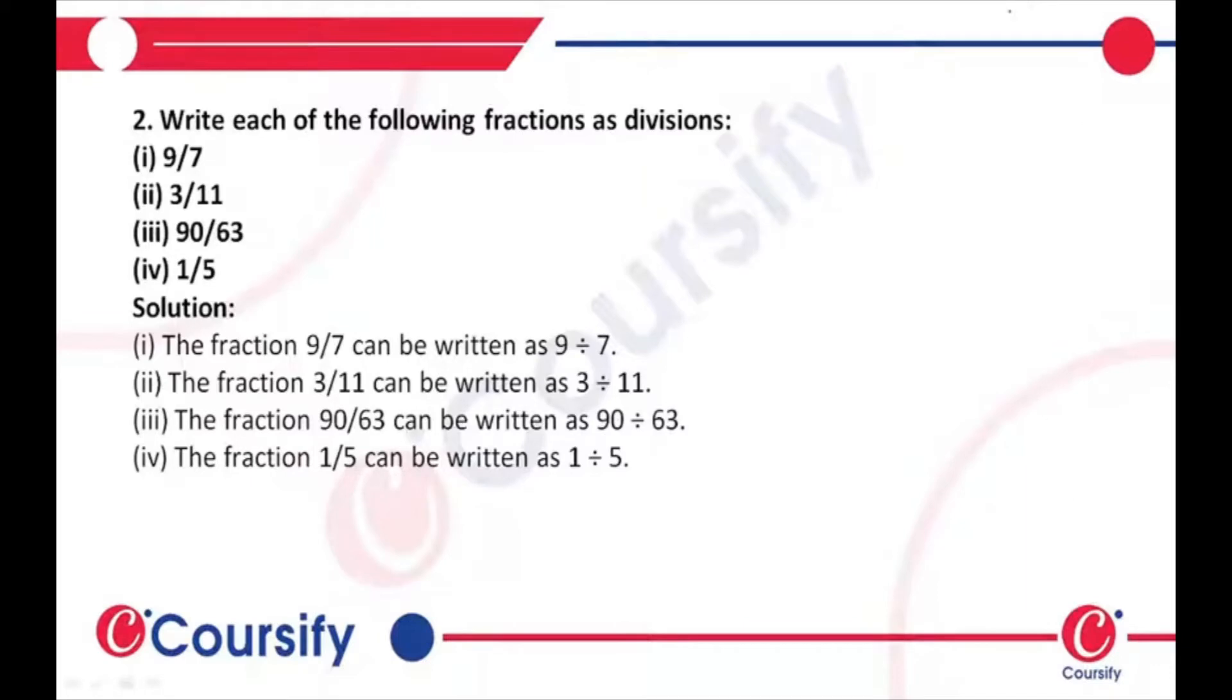Previously we wrote it in the form of fractions. Now we have to write in the form of divisions. Basically, to write in the form of division, we just simply replace the symbol with the divided by symbol. So for 9 by 7, we have simply 9 divided by 7. Just replace it - we have the numerator divided by denominator. This will be the answer.